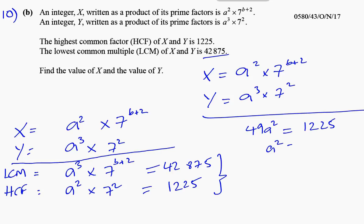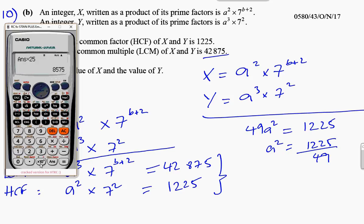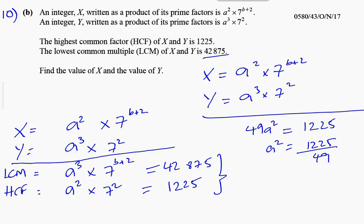We can resort to the calculator to work that out. So you have 1,225 divided by 49, which gives you 25. So we know that a² is equal to 25. Therefore, a must be 5. The square root of 25 must be a positive number. So a is equal to 5.